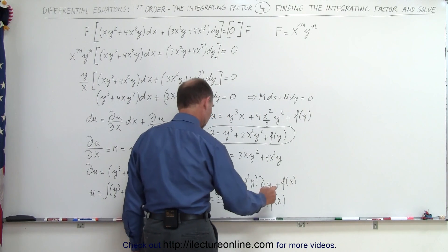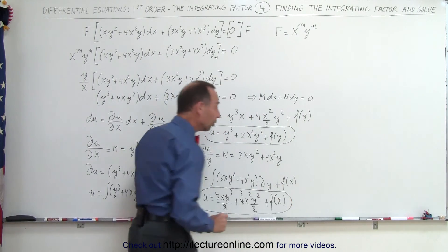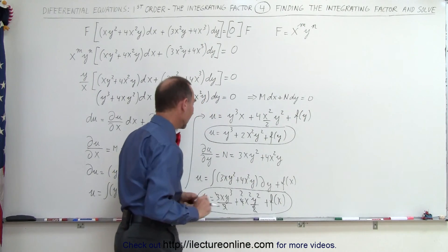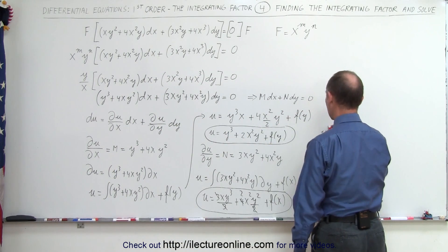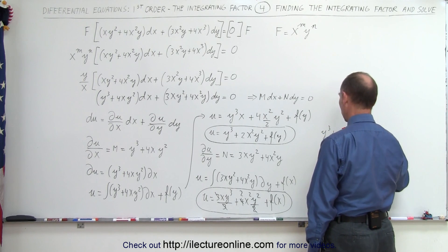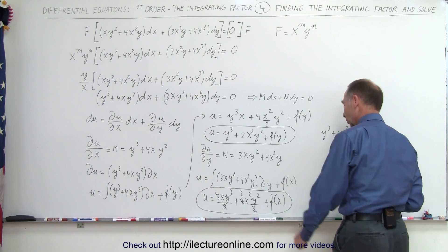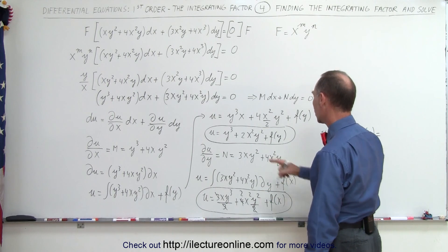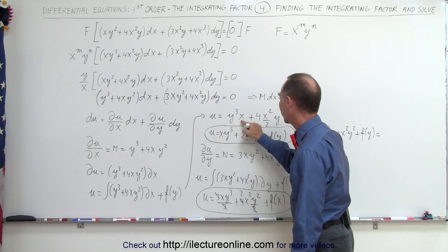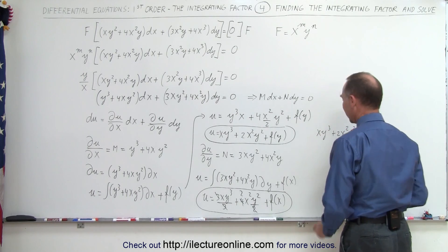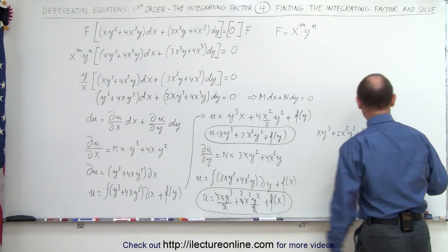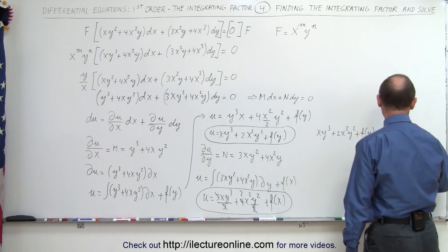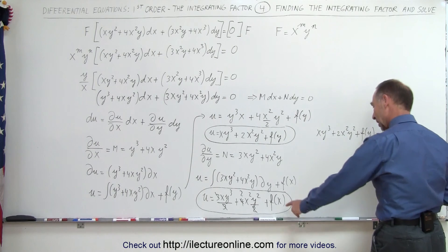Here is another expression for u. Those two expressions must be equal to each other, so let's set them equal and solve for g(y) and g(x). We have: xy³ + 2x²y² + g(y) = xy³ + 2x²y² + g(x). Notice we have xy³ on both sides — they're equal. We have 2x²y² on both sides — they're equal as well.